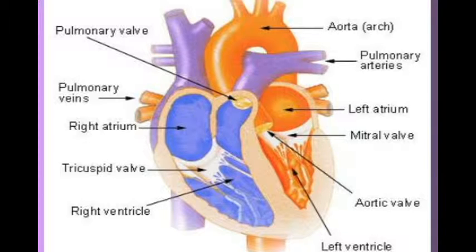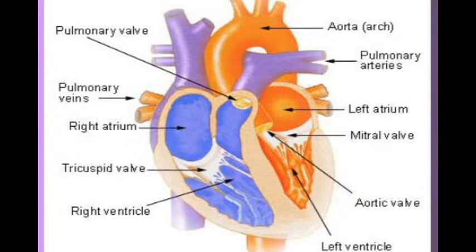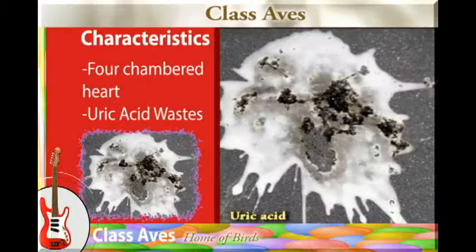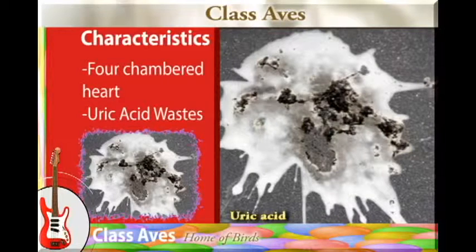All organisms found in this class have a heart with four chambers. The heart has the left and right auricles and the left and right ventricles. The excretory product is in the form of uric acid.